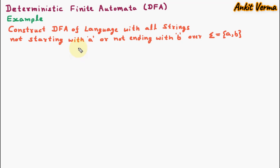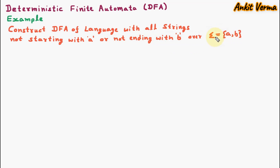Hello everyone, my name is Ankit Verma and today we are learning the example of deterministic finite automata which is DFA. Here we construct a DFA for the language with all strings not starting with A or not ending with B over sigma equal to {A, B}.